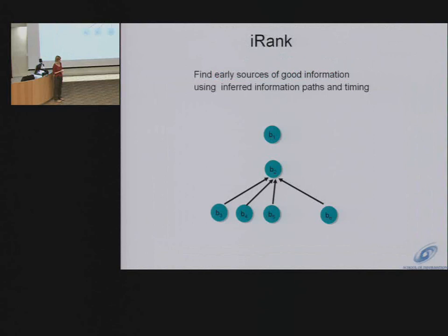With these inferred networks you can rank blogs according to how good they are as a source of new information — what we called iRank, which is just running PageRank on the inferred network. You can get high iRank if you're Boing Boing — you're so popular that if you talk about something you're likely to be first. But if Boing Boing happens to be getting a lot of its information from some other blog, then that other blog would also get high iRank.